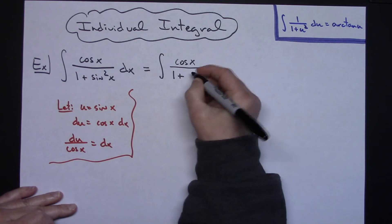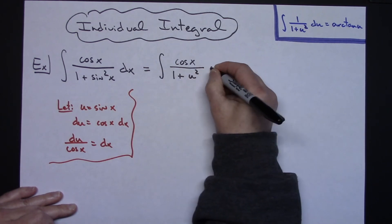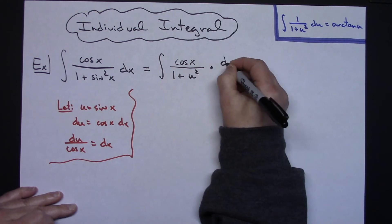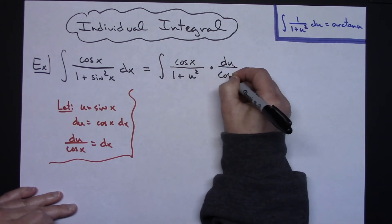Since u is sine x, I'll have u squared. Now replacing dx with what that equals, I'll have du over cosine x.